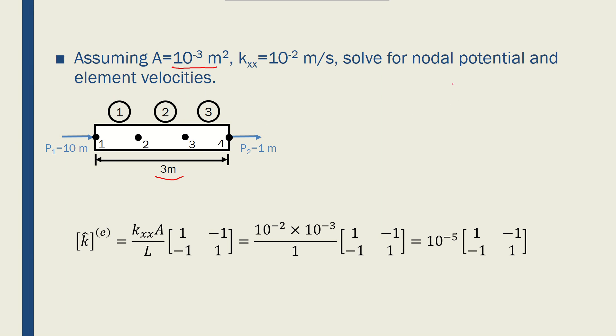We want to find the nodal potentials and element velocities. The potential at node 1 is 10 meters, and the potential at node 2 is 1 meter, and we want to discretize this pipe into three elements. They're all at the same length, so L of each element is 1 meter.